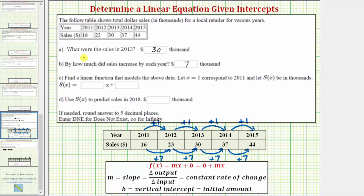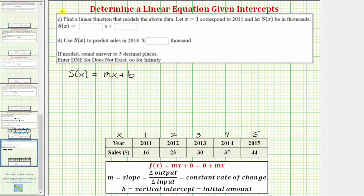Which we actually already know, because we already discovered sales are increasing by $7,000 each year. And therefore m equals seven. The units would be thousands of dollars per year. And b is the vertical intercept, which is the initial or starting amount.